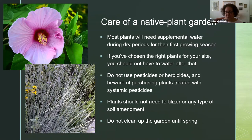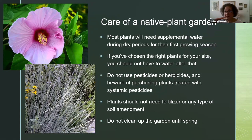The main thing about growing a habitat is: do not use pesticides or herbicides, and beware of purchasing plants treated with systemic pesticides. You can buy a beautiful milkweed, but if it's treated with neonicotinoids, the caterpillars that eat it will die. Last year the American Gardening Association put out an advisory that people should avoid buying plants from big box stores — Lowe's, Home Depot, Walmart — because those plants are all treated. If you buy from a small specialty nursery, the plants will not be treated with pesticides. These plants should never need fertilizer or any kind of soil amendment. And do not clean up the garden until spring.